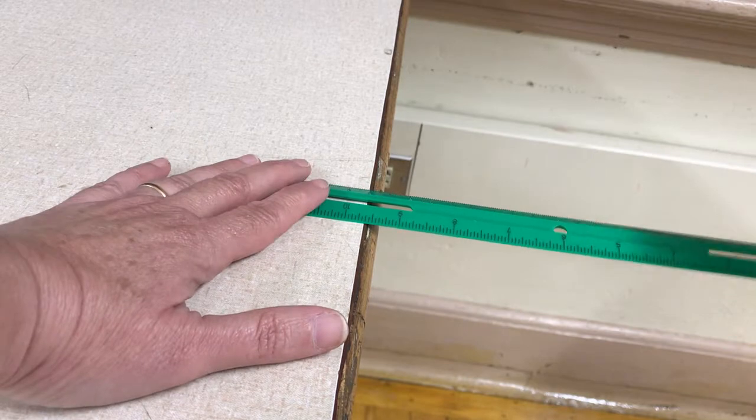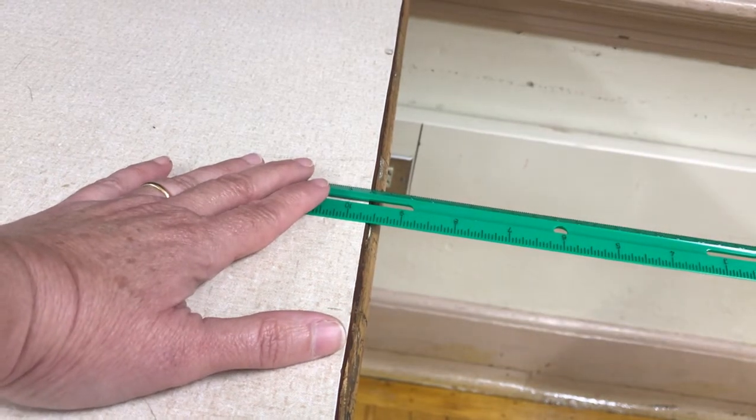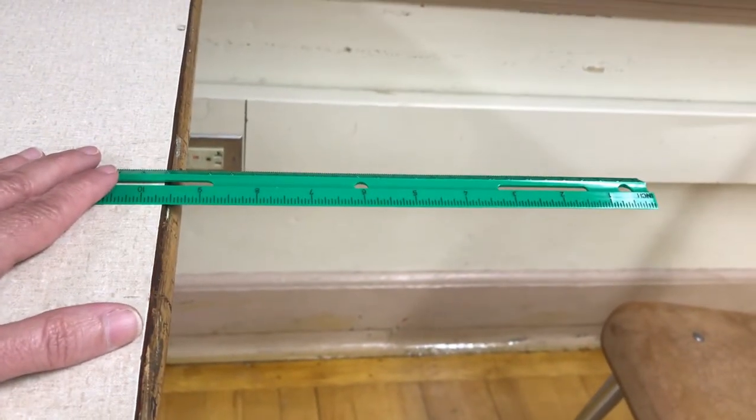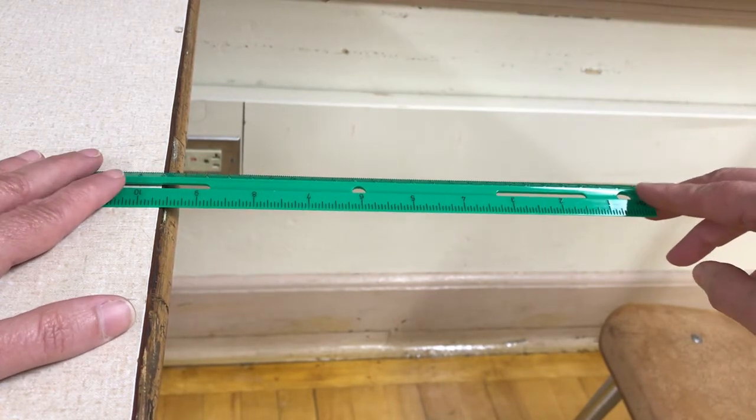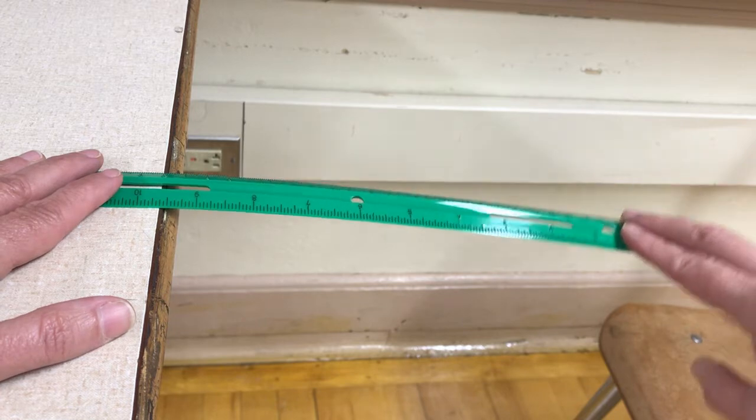Can you see the ruler go up and down really fast as it's making the sound? Now I'm gonna change it so that more of the ruler is off. Let me turn the camera a little bit. So now a lot of the ruler is off. Let's check out these vibrations. Watch them and listen.